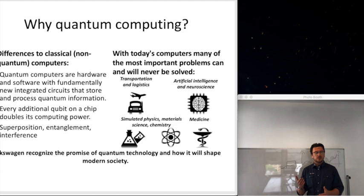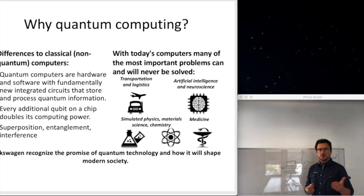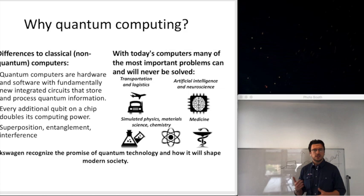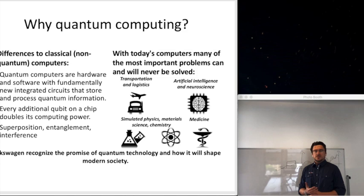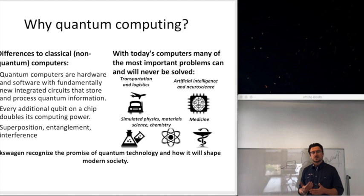There are many problems today's computers cannot solve, including transportation and logistics. For traffic flow optimization, we want to solve the optimal distribution of vehicles as quickly as every one to five seconds as data arrives. This doesn't mean vehicles get rerouted every five seconds, but if a crash happens or flow cost increases, the optimization algorithm should react as quickly as possible. Similarly, tool distribution in production requires knowing where limited tools are needed at any given time.